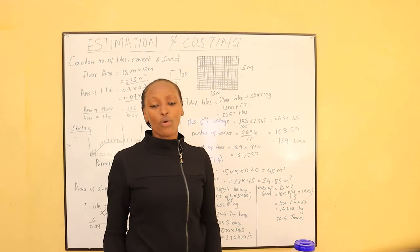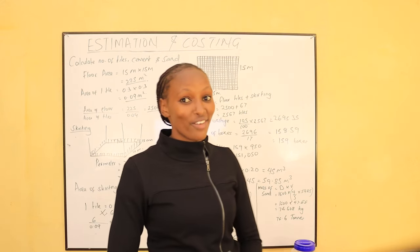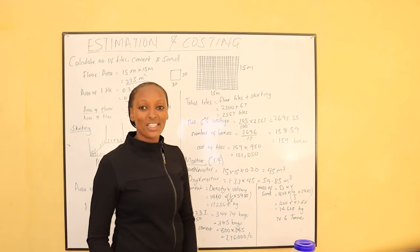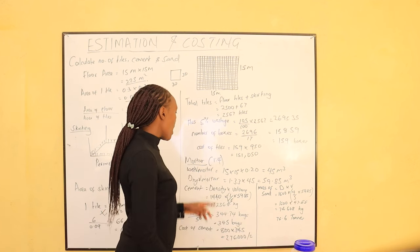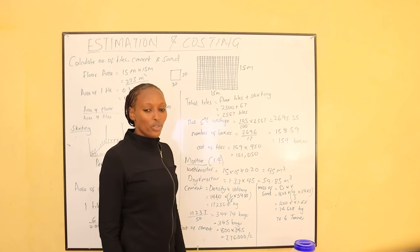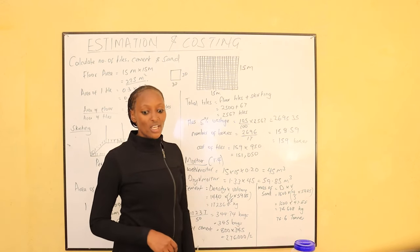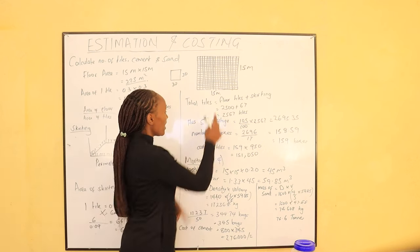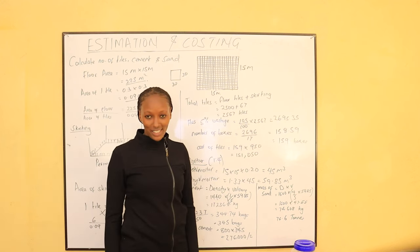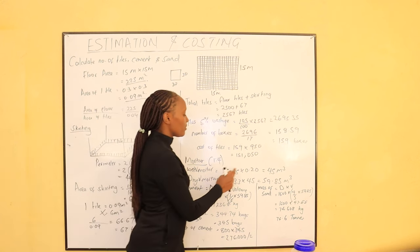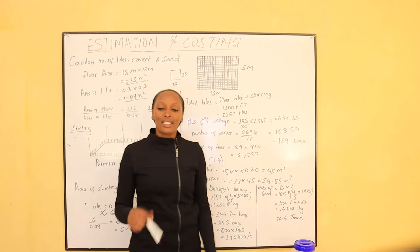The mortar ratio is 1:4 — one part cement to four parts sand. The wet volume of mortar is calculated as the floor area multiplied by the mortar thickness. The thickness when doing tiling is usually 20 millimeters, so in meters it is 0.02 meters. Therefore, the wet volume is 15 × 15 × 0.02 = 4.5 cubic meters.